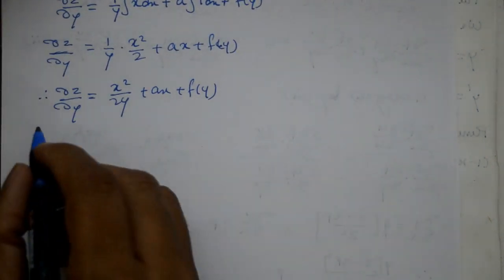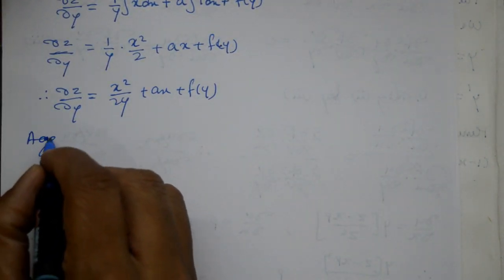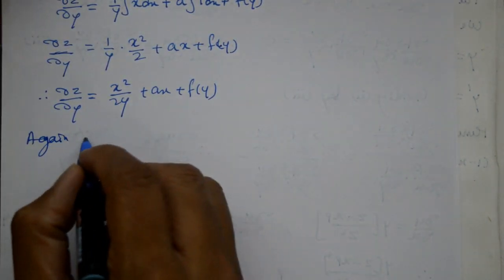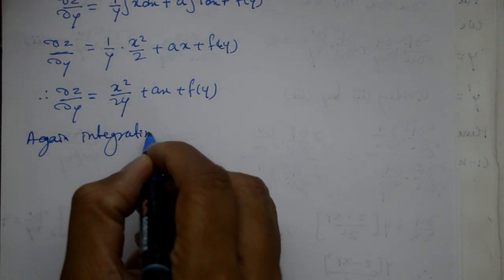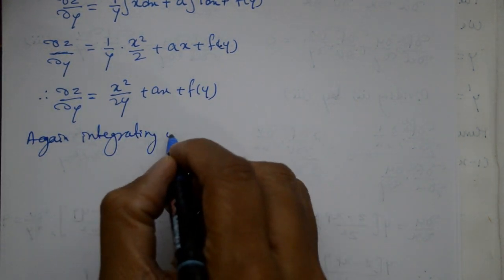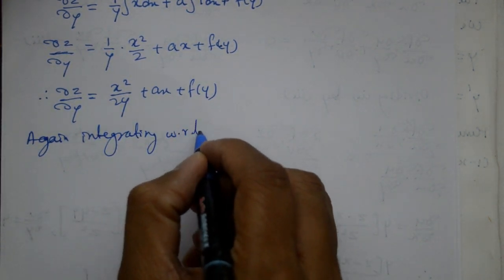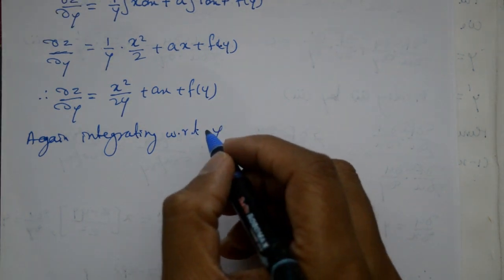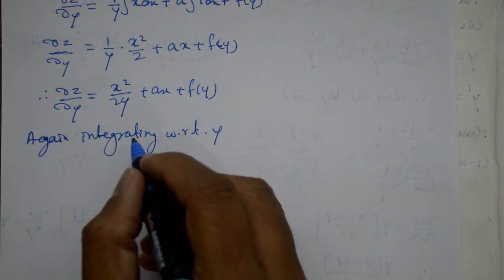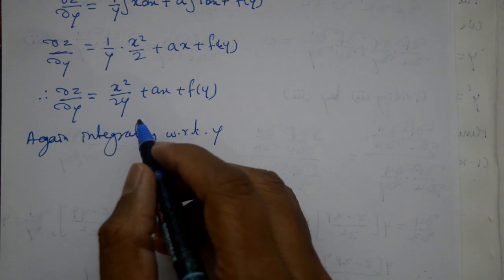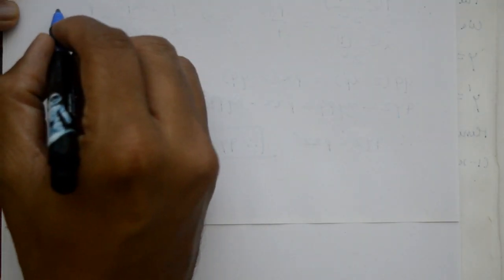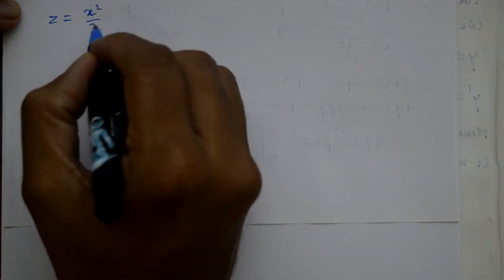Again integrating with respect to y. X is treated as a constant. After integration we get z on the left-hand side.